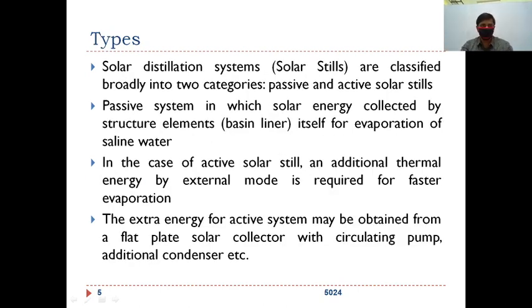In general, solar stills or solar distillation systems can be classified into two categories: passive and active solar systems. In passive systems, solar energy is collected by structure elements like the basin liner.